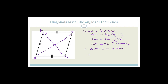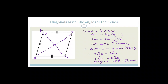Therefore, triangle ADC is congruent to triangle ABC by Side-Side-Side. Therefore angle DAC equals angle BAC, and similarly angle ACD equals angle ACB. Therefore, the diagonals bisect the angles at their ends.